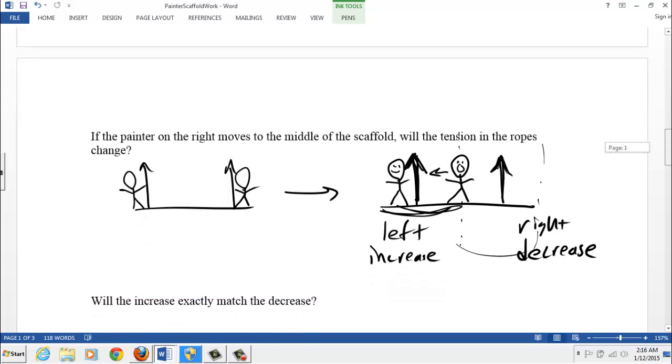Will the increase exactly match the decrease? Starting again, we said the tensions were exactly equal if the painters are the same distance away from each other, equally placed on the scaffold, and they weigh the same. As this guy moves over and then stops, we would say that the tension over here is going to increase and this is going to decrease.